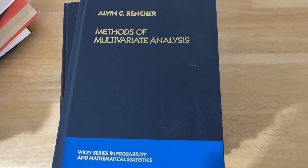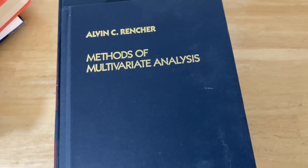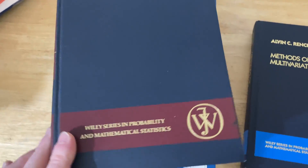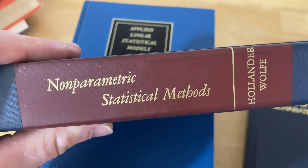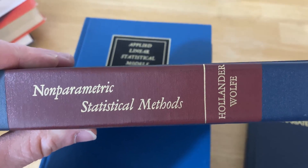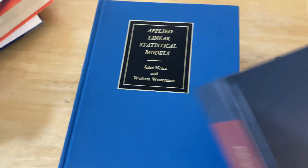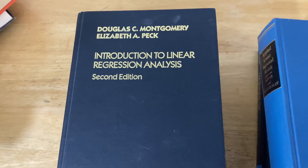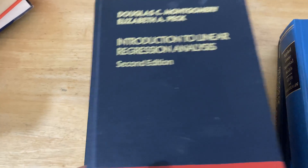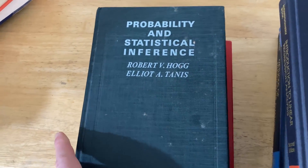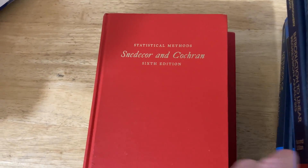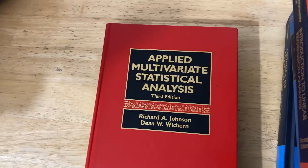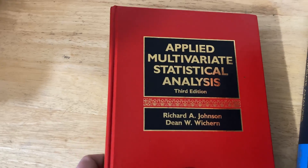Let's take a look at some more advanced titles. We have Methods of Multivariate Analysis by Alvin Rencher — a very nice book. Here we have Non-Parametric Statistical Methods, so very specific. Applied Linear Statistical Models. Introduction to Linear Regression Analysis. Probability and Statistical Inference. Statistical Methods — this is a really nice book. And Applied Multivariate Statistical Analysis. All excellent textbooks.